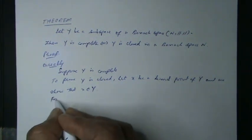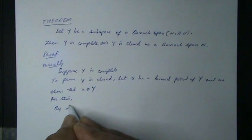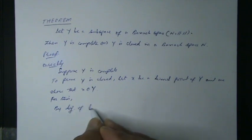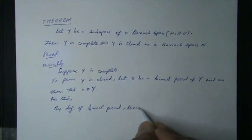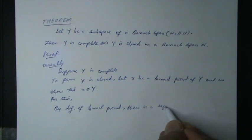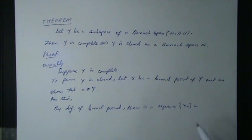For this, by definition of limit point, there is a sequence x_n in subspace Y such that ||x_n - x|| converges to 0 as n tends to infinity.